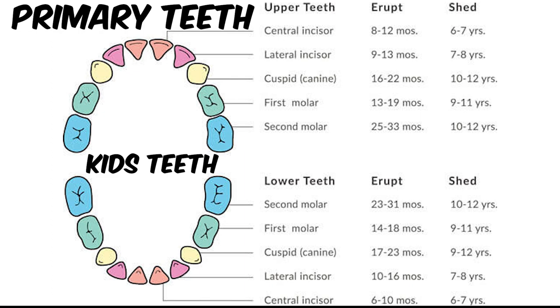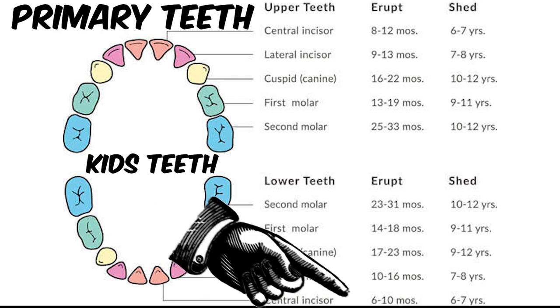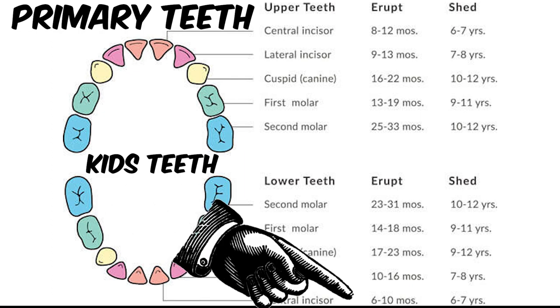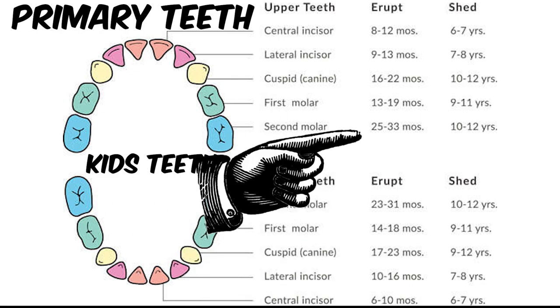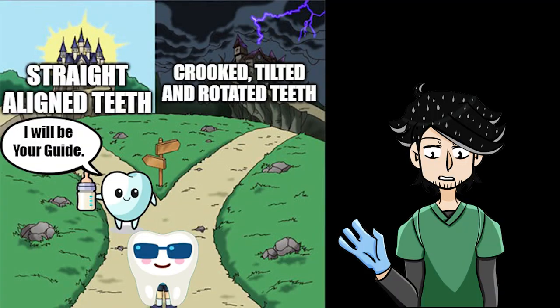As for the baby teeth, they begin to emerge from the gums at about six months old, and it ends at about three-ish years old, give or take. Primary teeth on their own are important for a number of reasons - they help with speaking and pronunciation, and they help guide the permanent teeth into their correct position as they come into place.